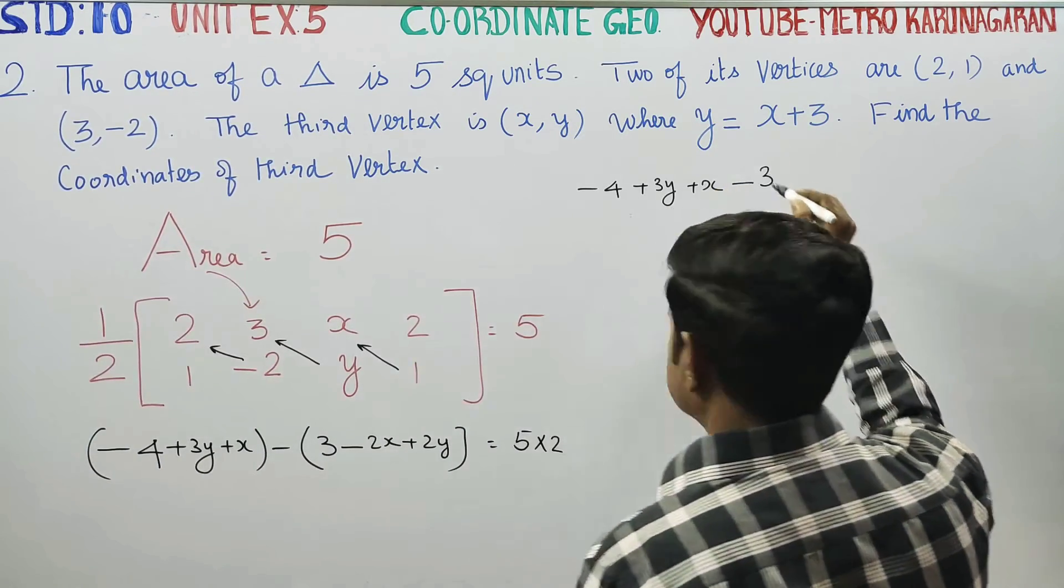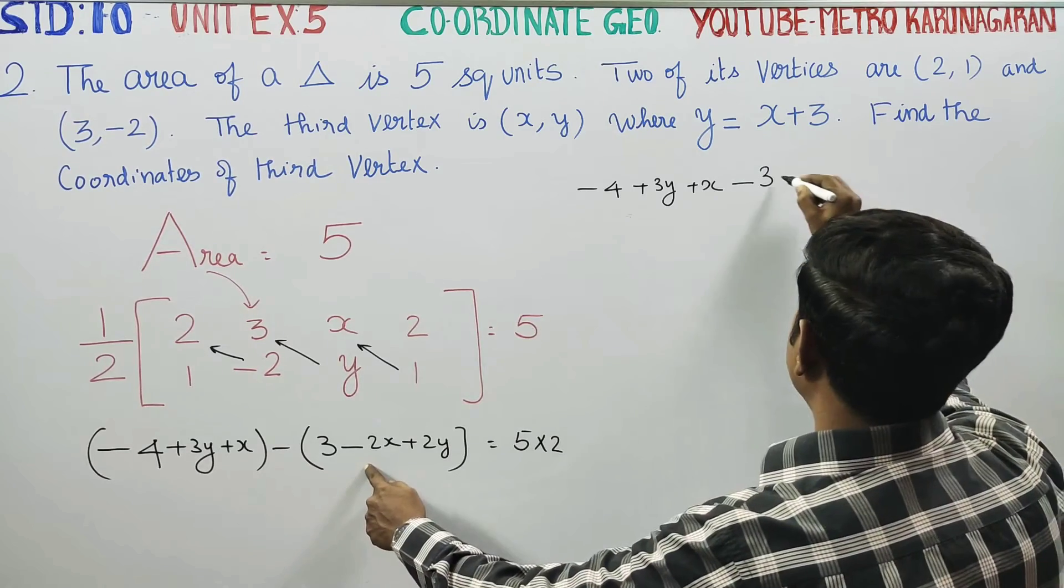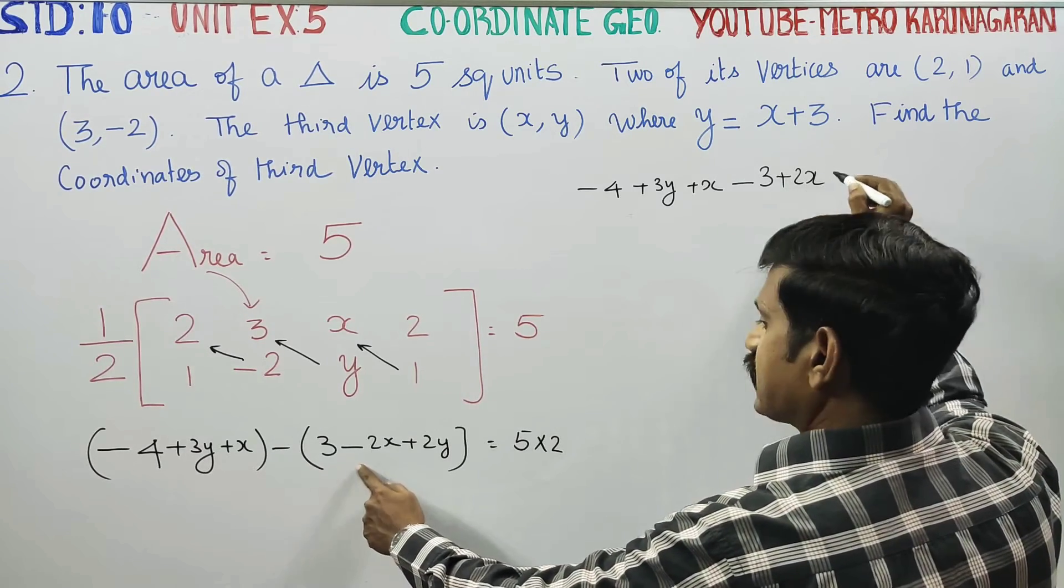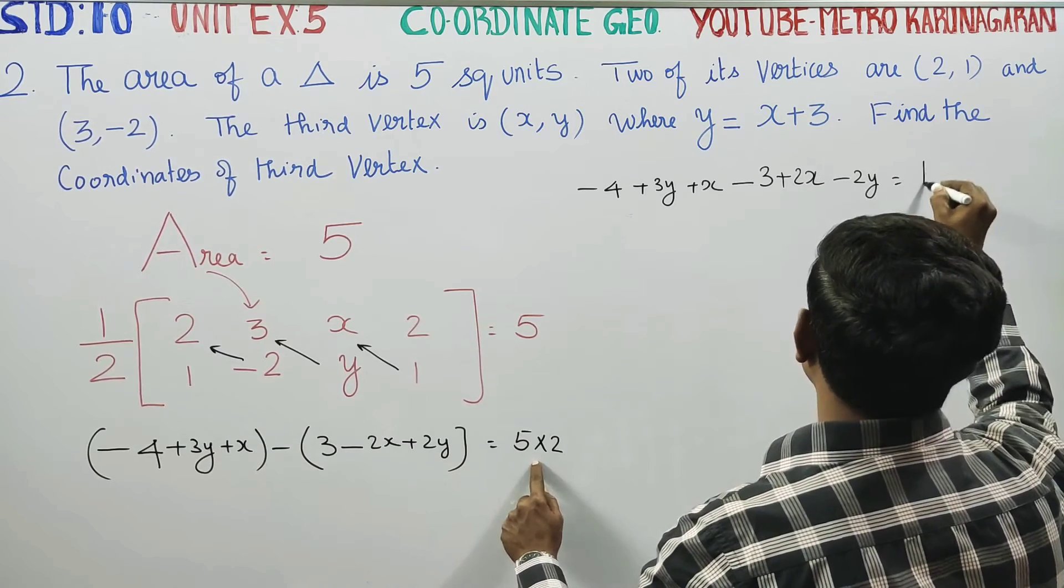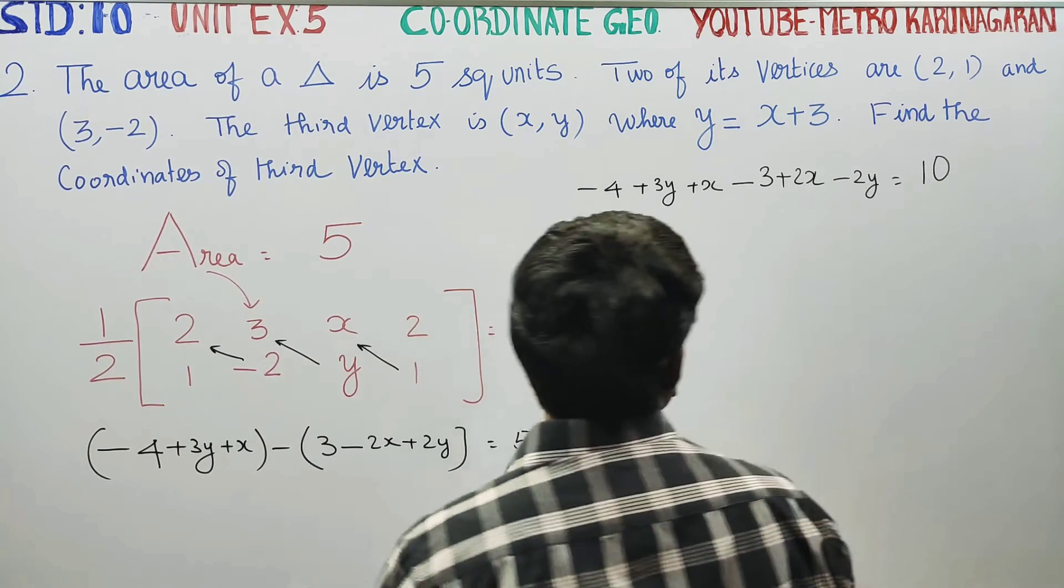Remove the brackets. -4 plus 3y plus x minus, the minus 3 becomes plus 3, minus 2x becomes minus, so minus 2y is equal to 5 into 2 is 10.